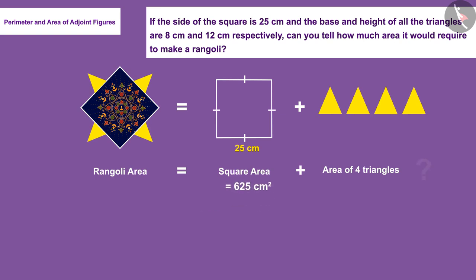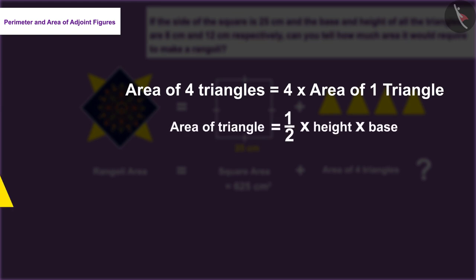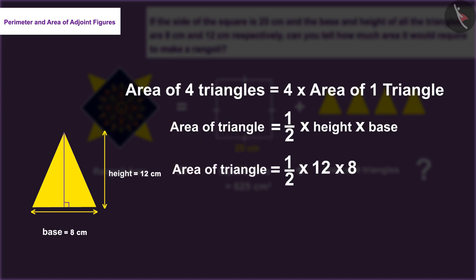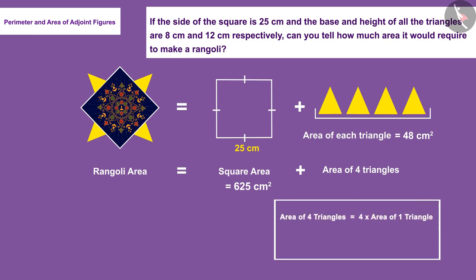Now, how do we find the area of the triangles? Since these four triangles are congruent, the area of all triangles will be equal to four times the area of one triangle. Using the formula for the area of a triangle and substituting 8 centimeters and 12 centimeters as the base and height respectively, the area of one triangle is 48 square centimeters. Now can you tell the value of the area of all four triangles?